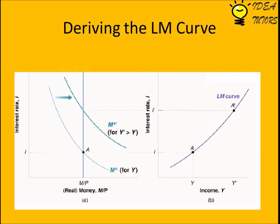The figures show that the LM curve is derived by joining equilibrium points of the money market. Thus we can say that the LM curve is the locus of points where the money market is in equilibrium.